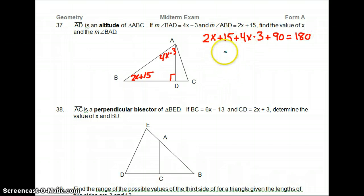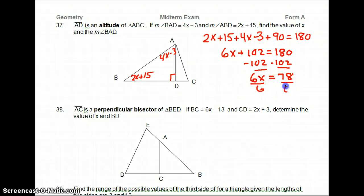Combine like terms. We've got 6X. We have 15 minus 3 is 12 plus 90 is 102. So it's plus 102 equals 180. Subtract 102 from both sides. 6X equals 78. Divide by 6.